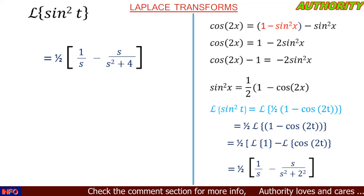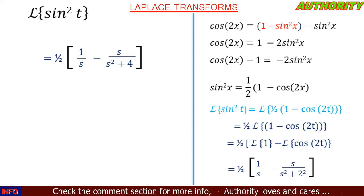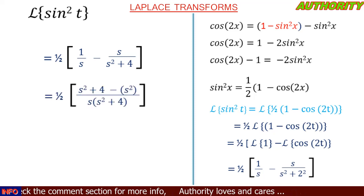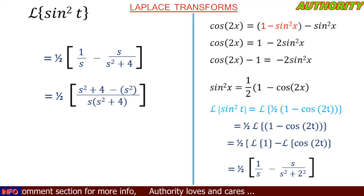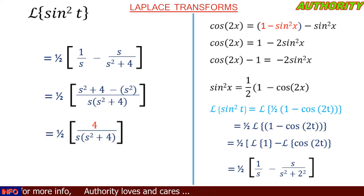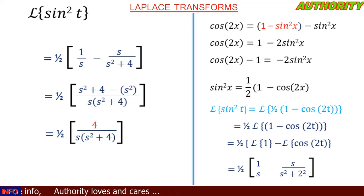Note that 2² = 4. Combining the terms inside the bracket, the LCM of the denominators is s(s² + 4). Combining gives [s² + 4 − s²] all over s(s² + 4). In the numerator, s² − s² = 0, leaving 4. So we have ½ × 4 / [s(s² + 4)].